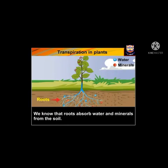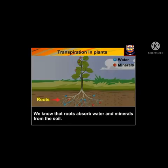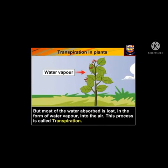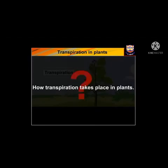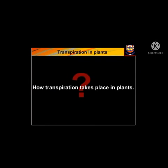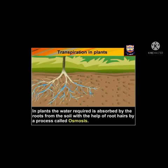We know that roots absorb water and minerals from the soil, but most of the water absorbed is lost in the form of water vapor into the air. This process is called transpiration. Now the question is: how does transpiration take place in plants?